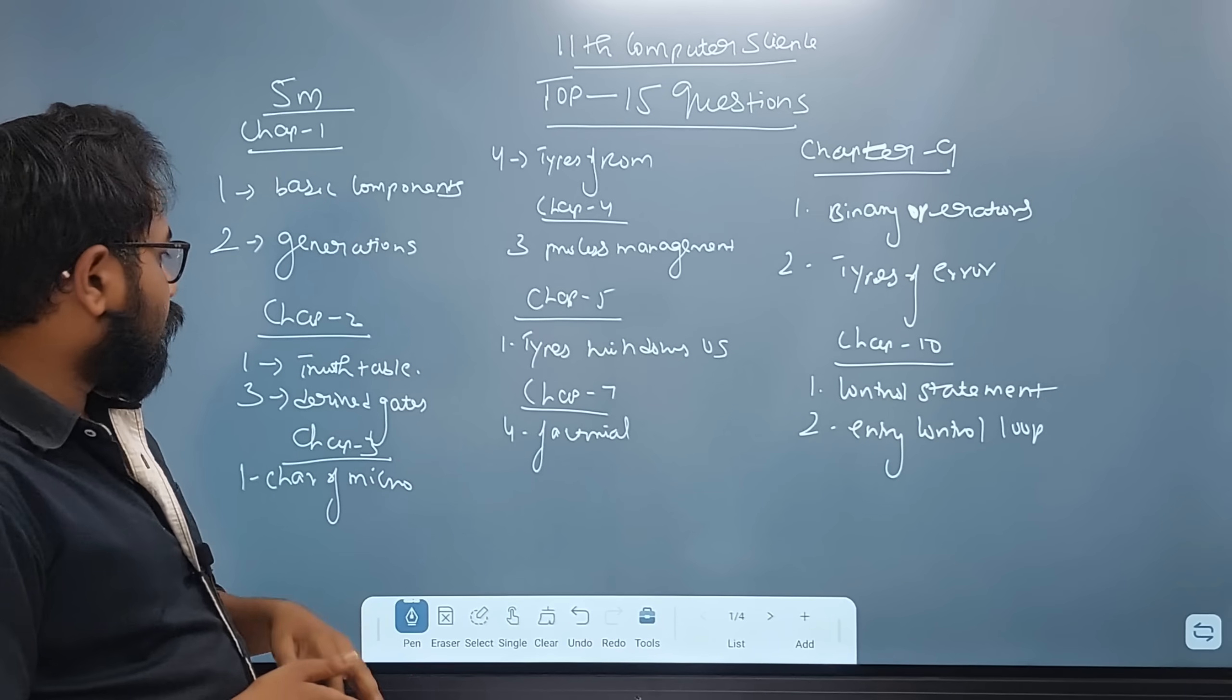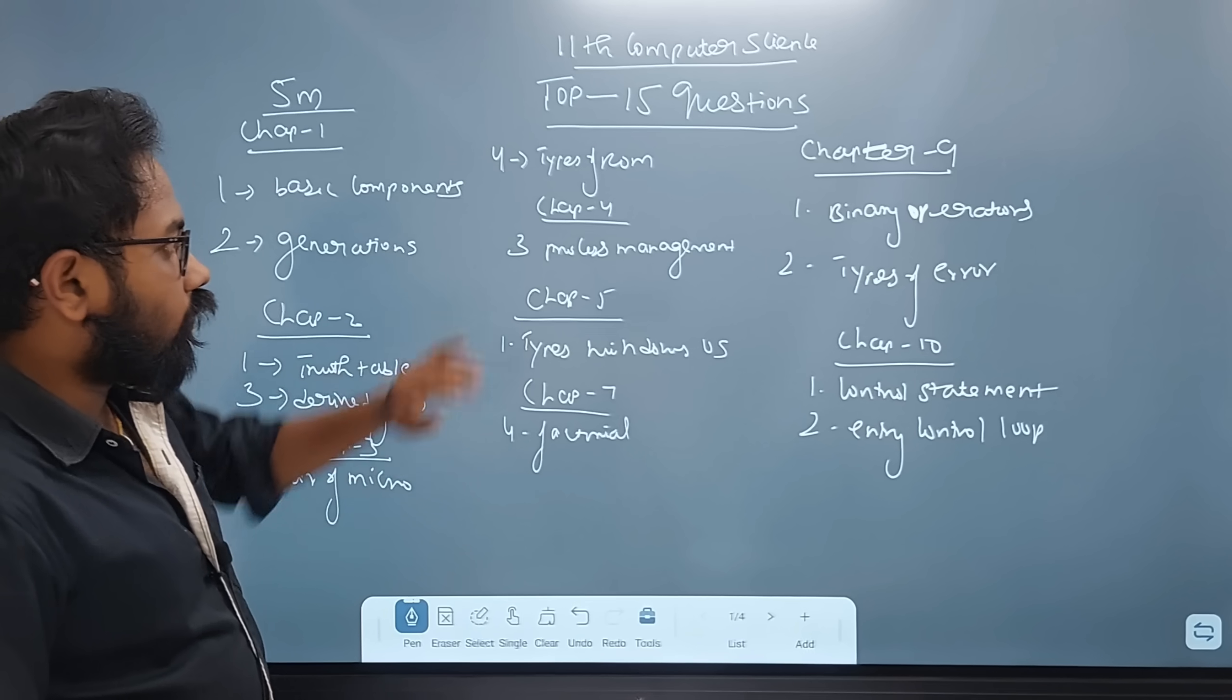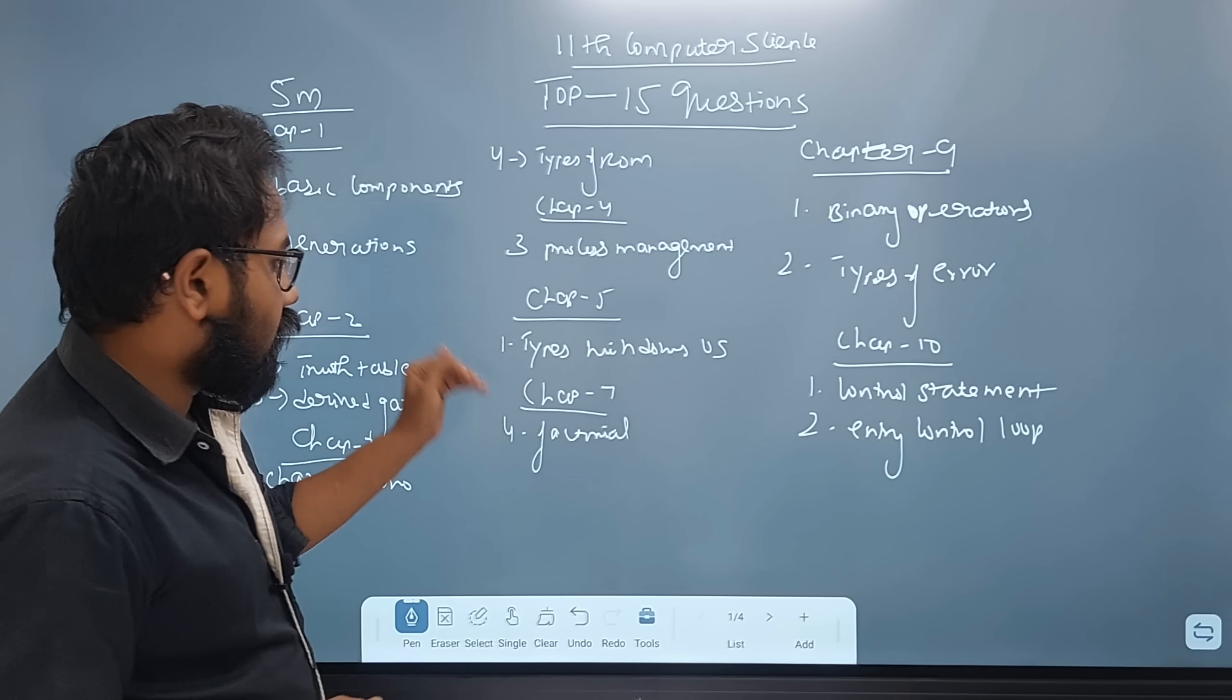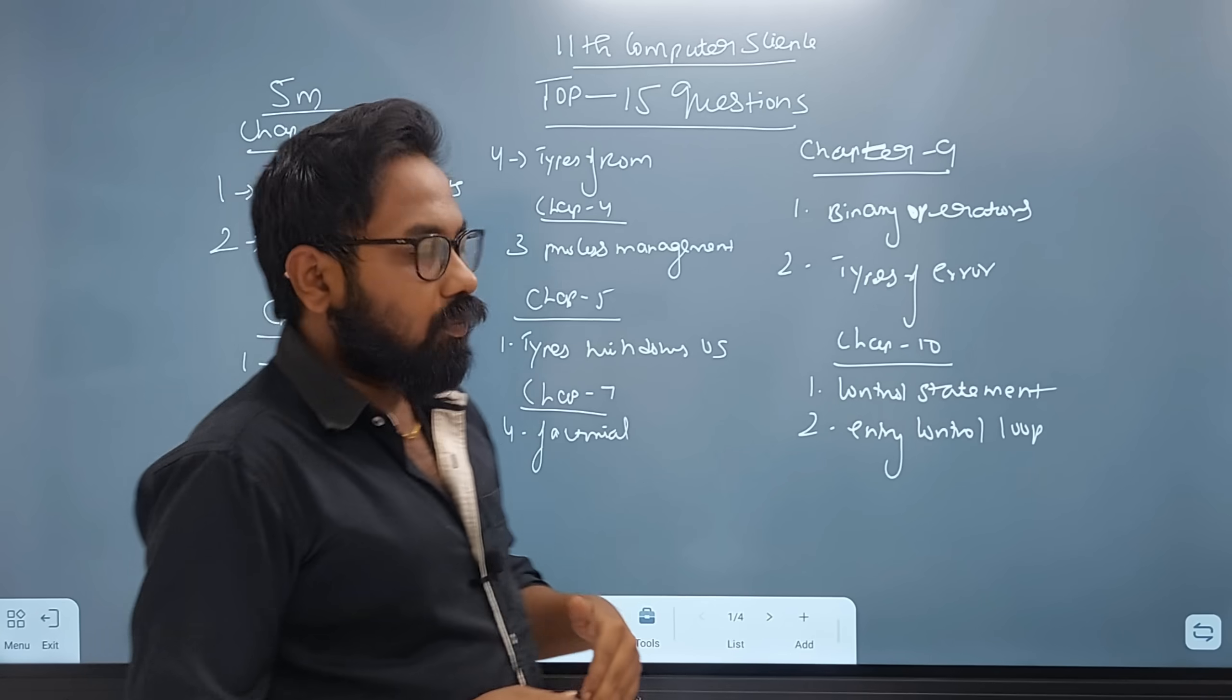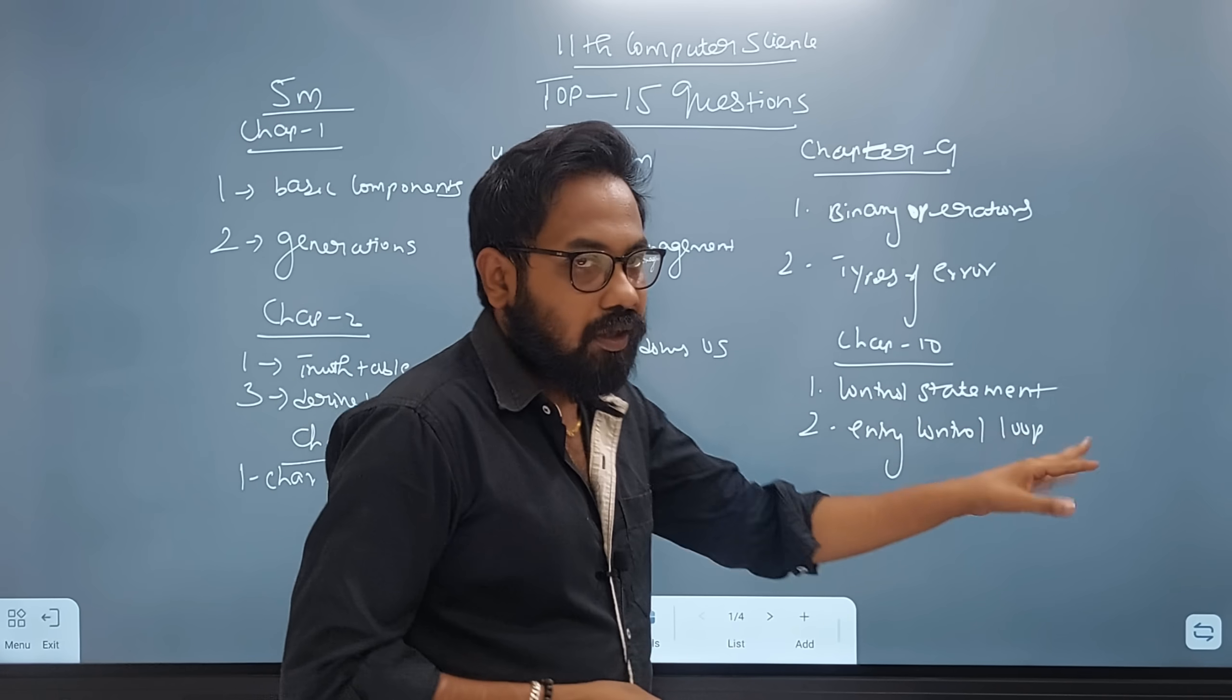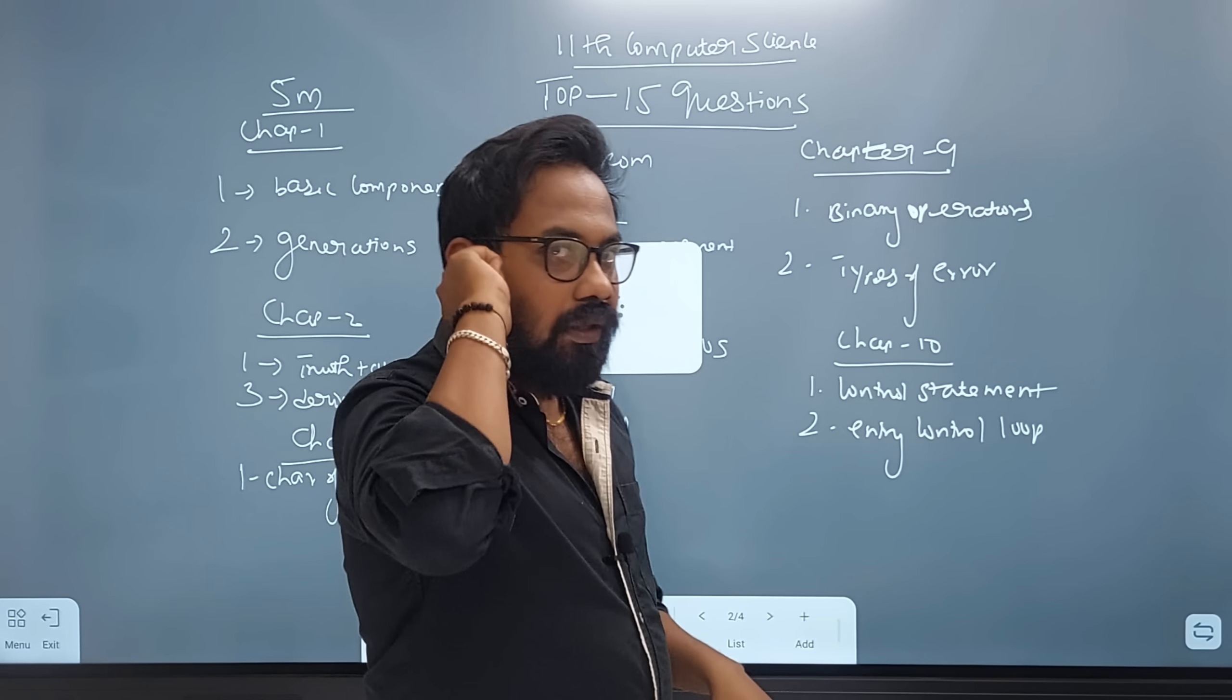Chapter 2 is truth table, first one. Chapter 3 is characteristics of microprocessor, types of ROM. Chapter 4 is process management. Chapter 5 is types of Windows OS. Chapter 7 is factorial program. Chapter 9 is binary operator, types of error. Chapter 3 is control statement, entry control loop. This is very easy.